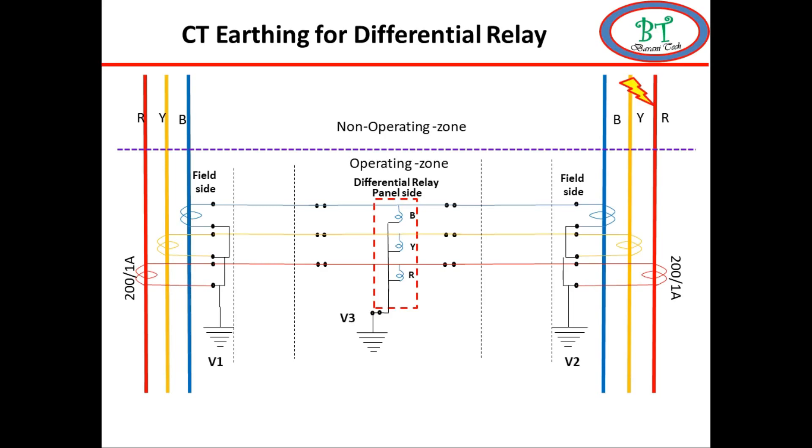During this fault the unbalance current is produced, which lead to neutral current flow. And this make a potential difference on each earth point. This potential difference will make an additional separate current on neutral path. Which lead to differential trip.